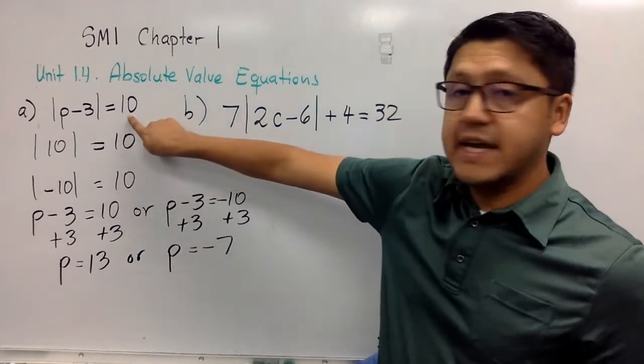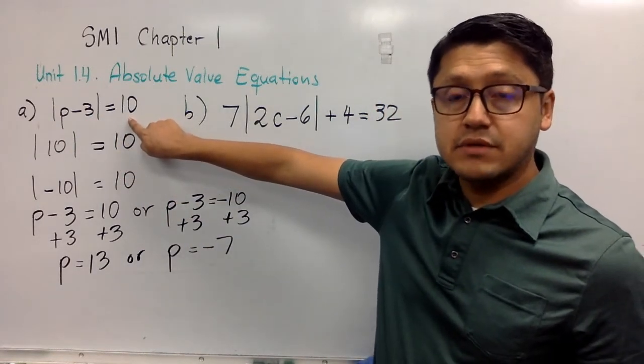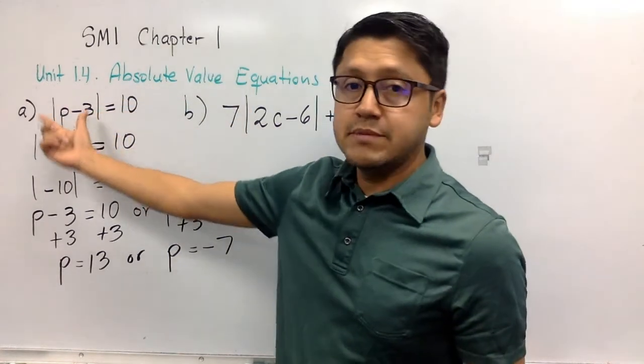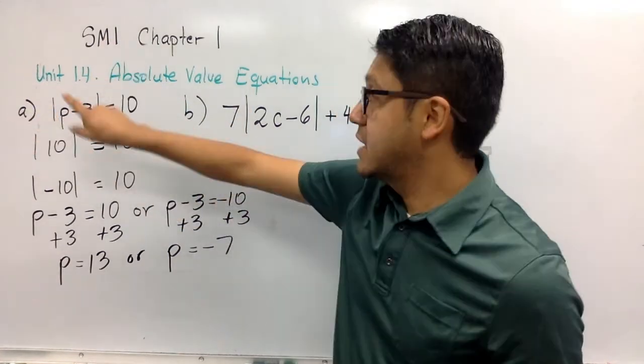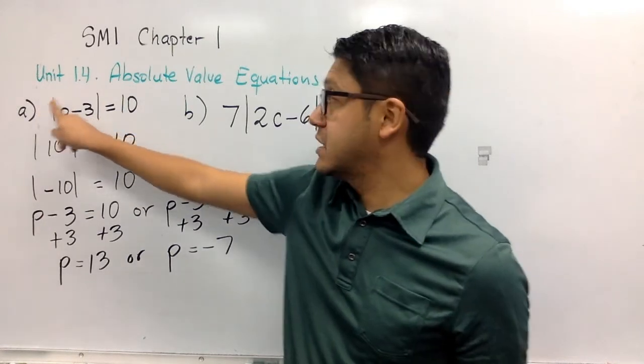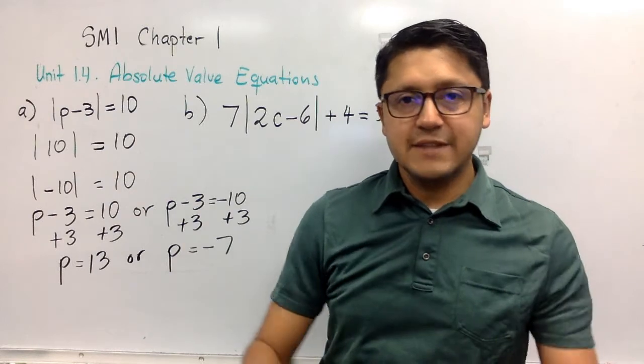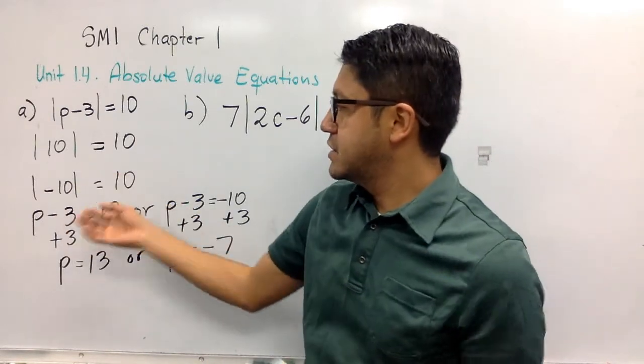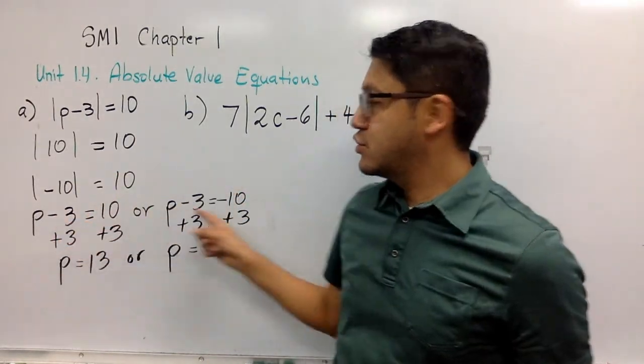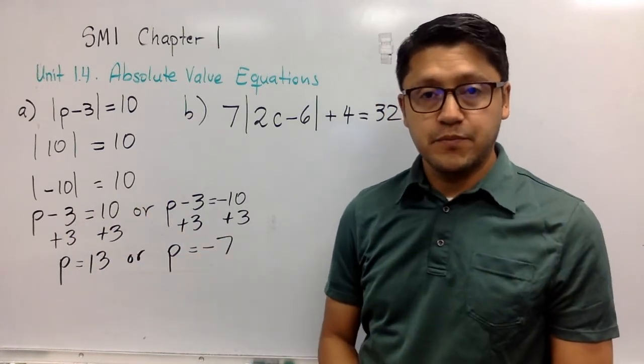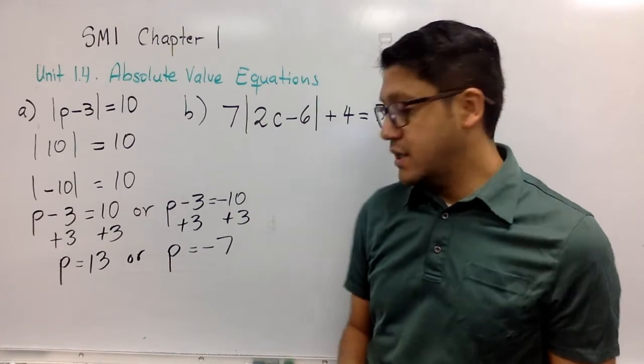So as you can notice, there are two possible answers to this equation. When you get a positive number outside or on the right, and on the left the absolute value is completely isolated with nothing multiplying or adding or subtracting, then we can just split it into two simple equations that you can now solve and find the two solutions.